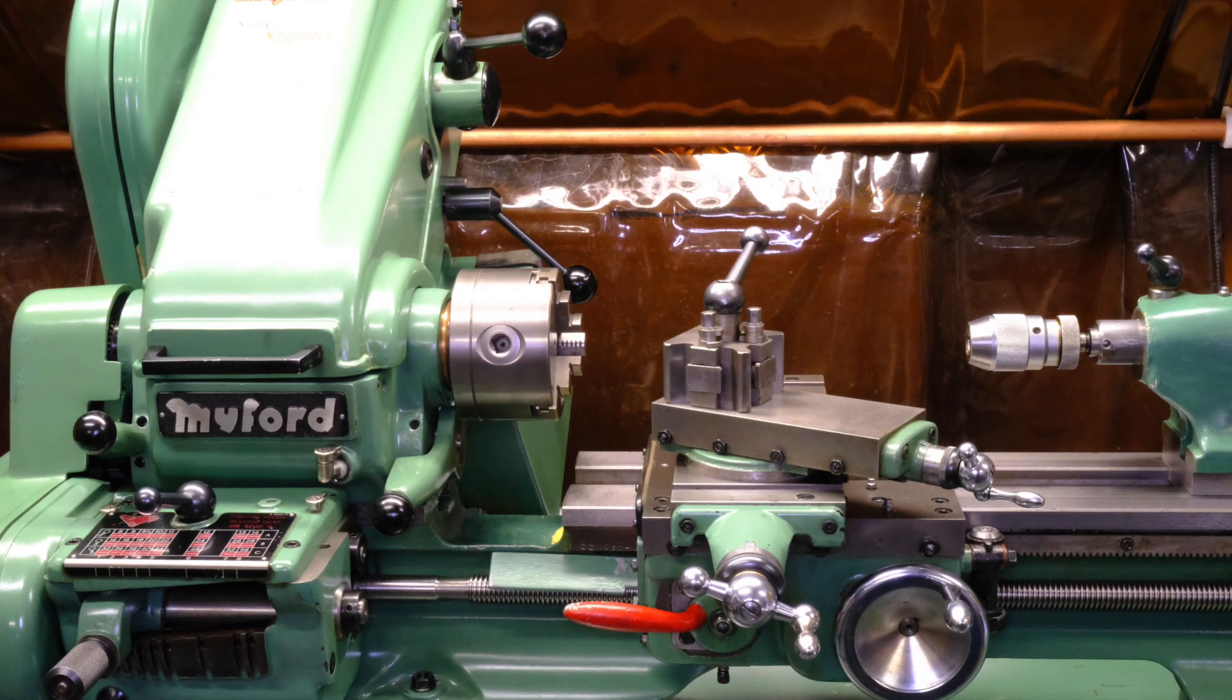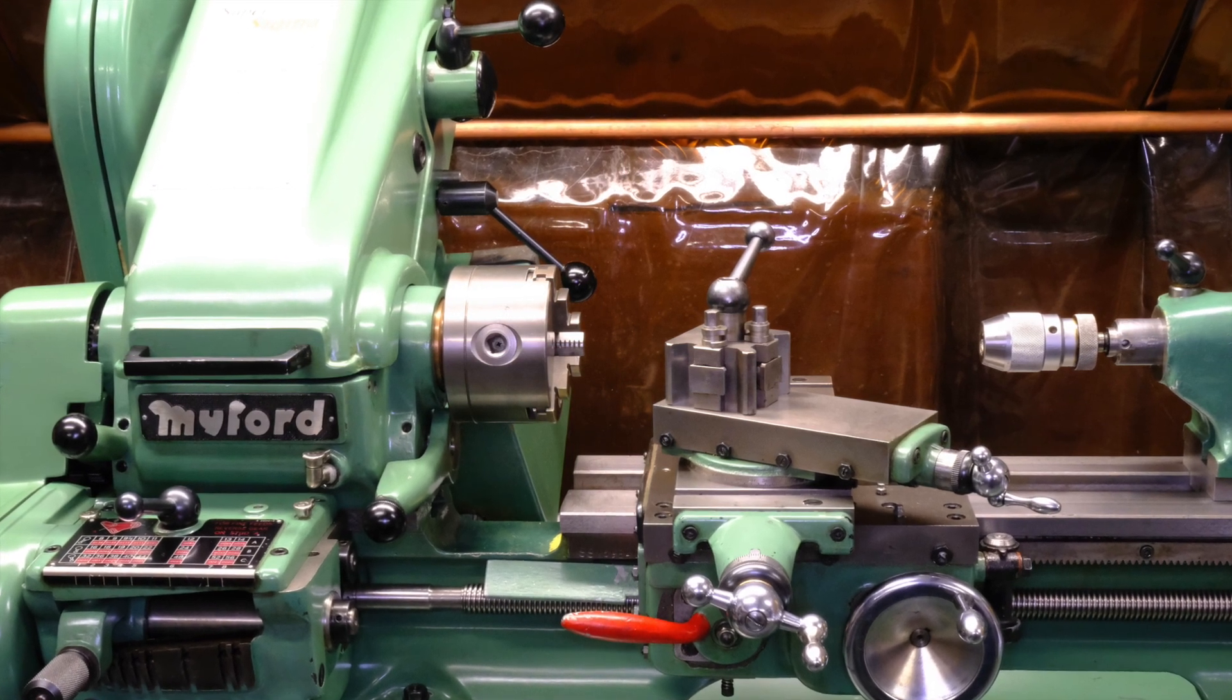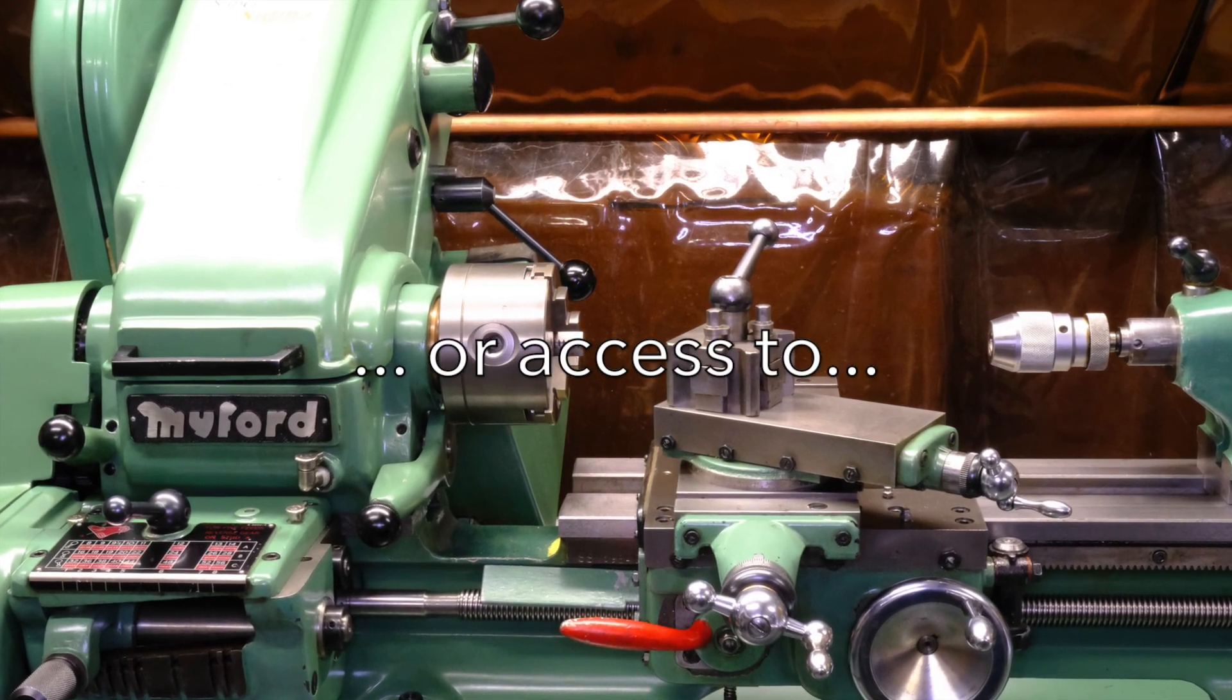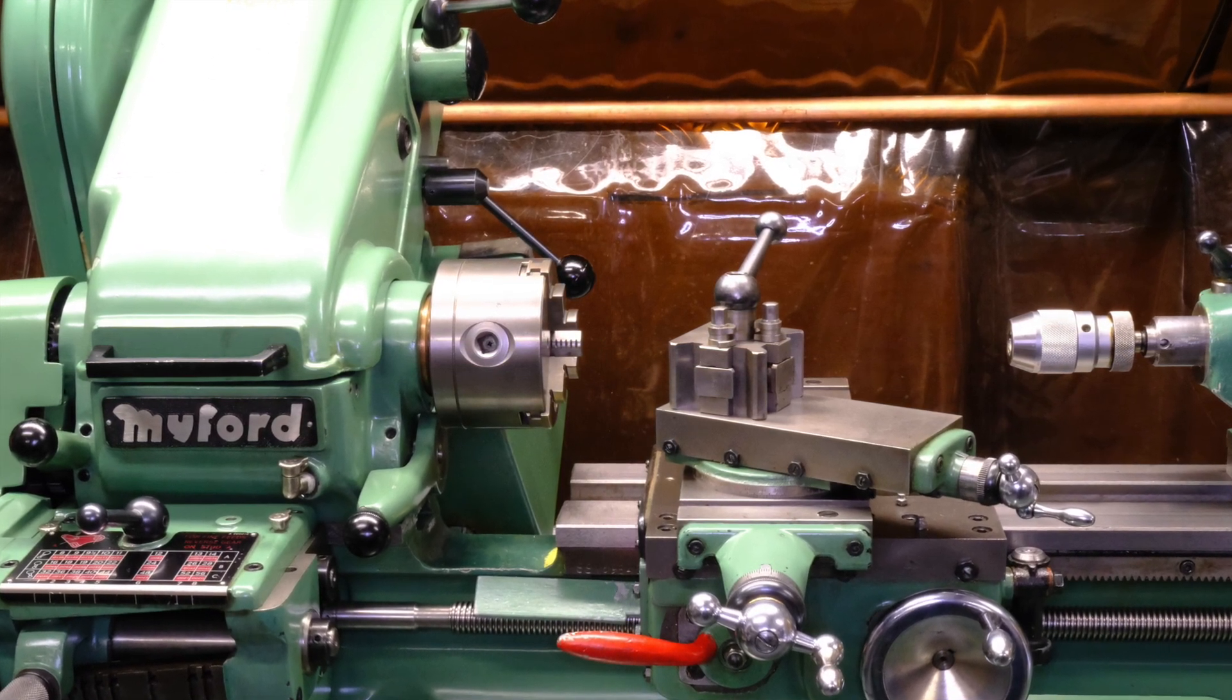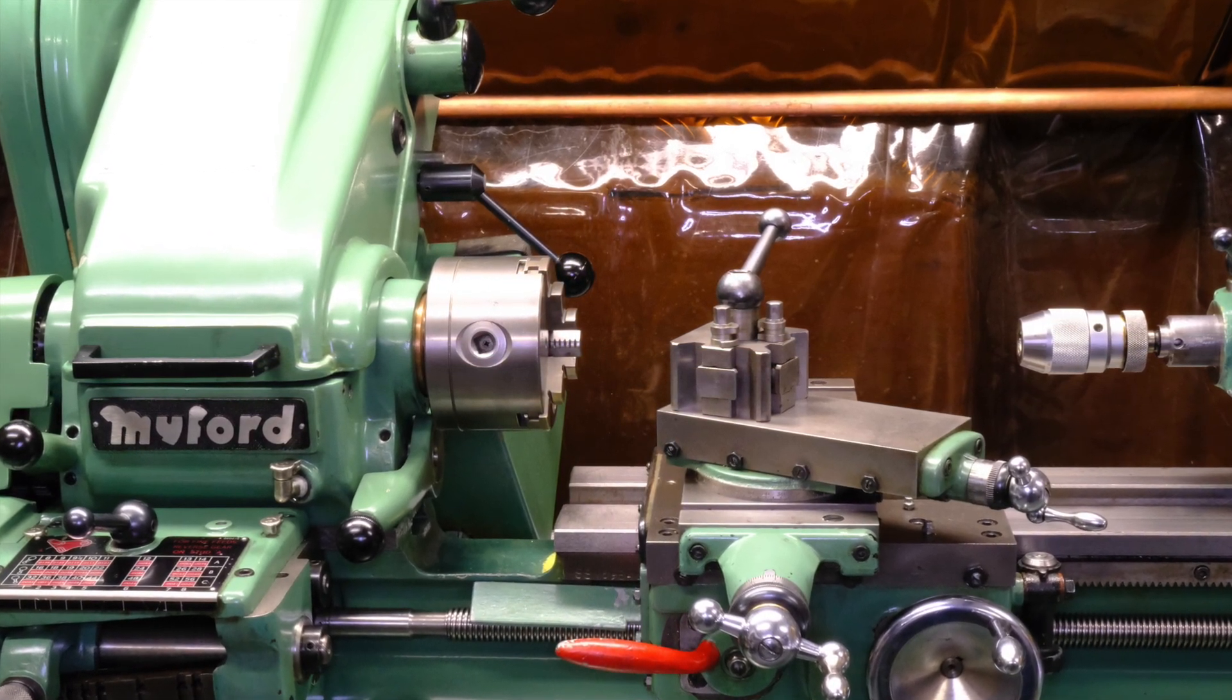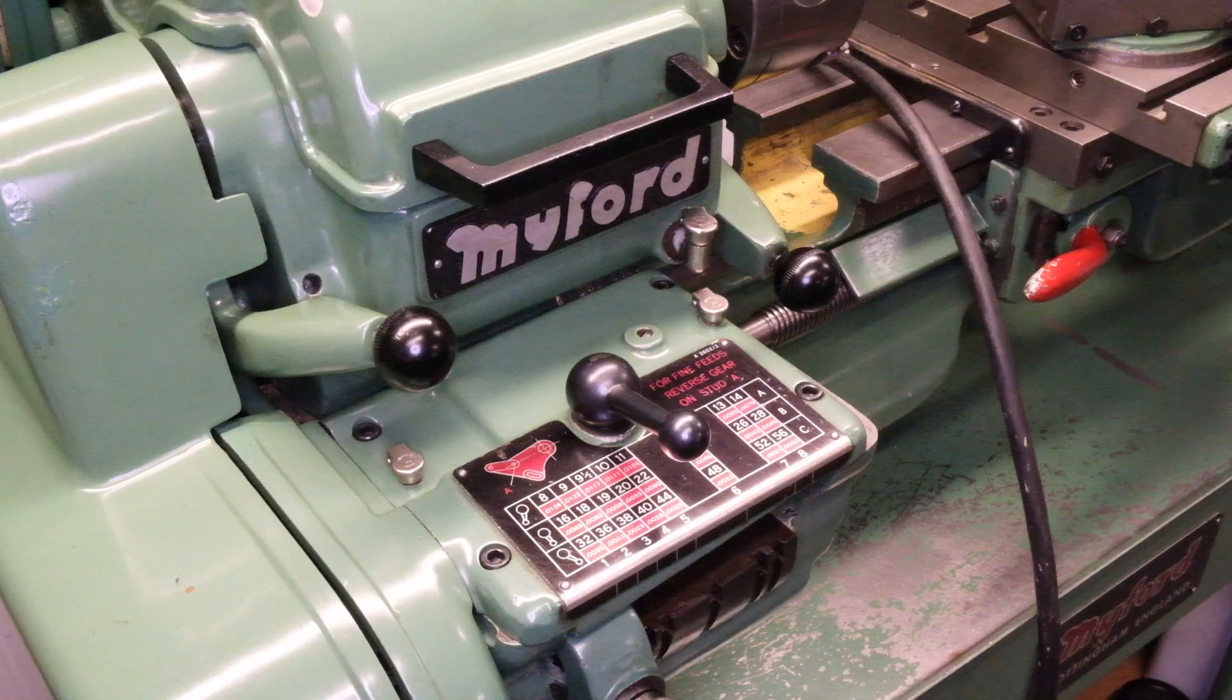The next way that we might decide to match a thread is using a screw cutting lathe. If you have a screw cutting lathe then you can make a tap and from a tap you can make a die.